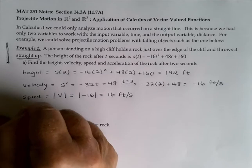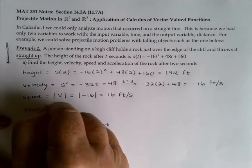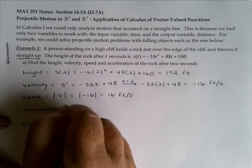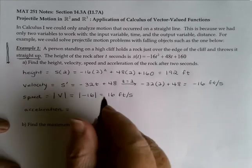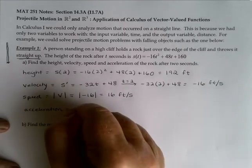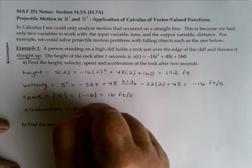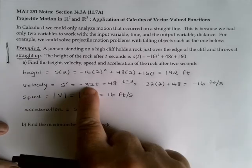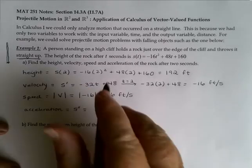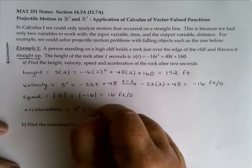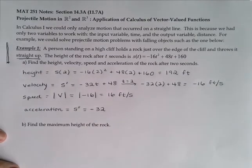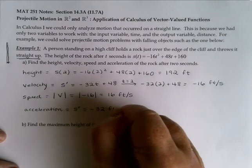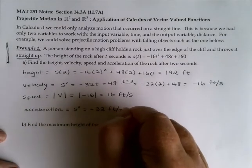Finally, the acceleration. Acceleration is the second derivative of your position function. We have our first derivative right here, so taking the derivative again would give me negative 32, and with our units, that would be feet per second squared.